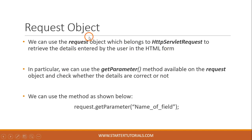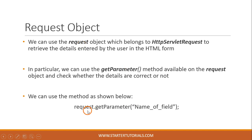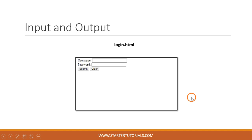For fetching the details from the HTML form into the servlet, we will use the request object. In the previous program we already saw this request object — it belongs to the HTTP servlet request interface. We are going to use the getParameter method available on the request object, and within the parentheses we give the name of the field in the HTML form.